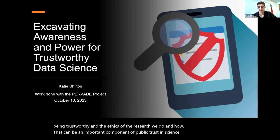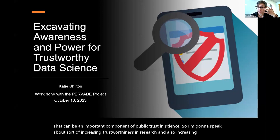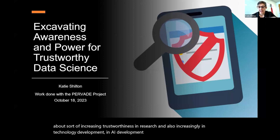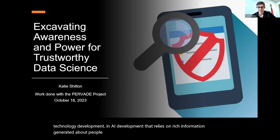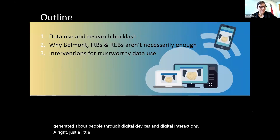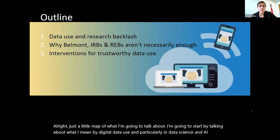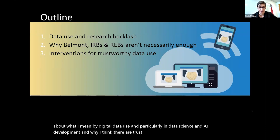I'm going to speak about increasing trustworthiness in research and also increasingly in technology development and AI development that relies on rich information generated about people through digital devices and digital interactions. Just a little map of what I'm going to talk about: I'm going to start by talking about what I mean by digital data use, particularly in data science and AI development, and why I think there are trust problems in this area.